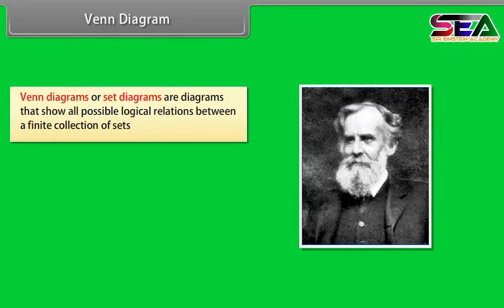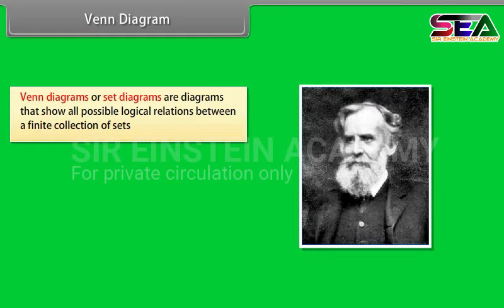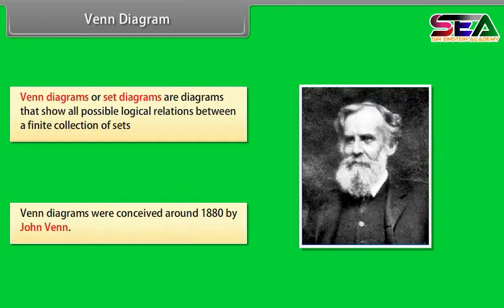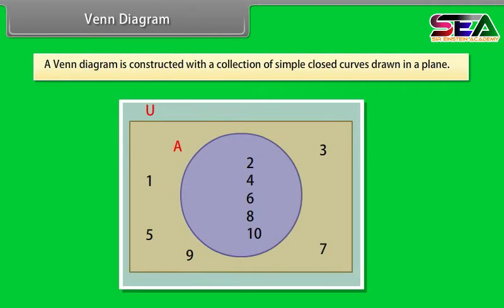Venn diagram. Venn diagrams or set diagrams are diagrams that show all possible logical relations between a finite collection of sets. Venn diagrams were conceived around 1880 by John Venn. A Venn diagram is constructed with a collection of simple closed curves drawn in a plane.